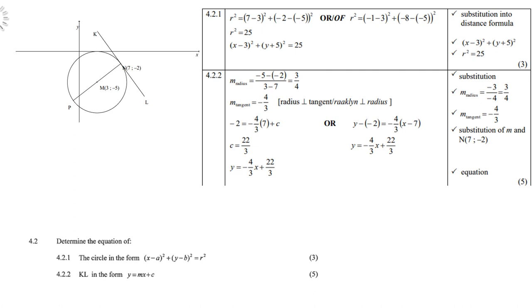Then KL in the form Y equals MX plus C. So we must first find the gradient of M using the gradient formula: minus 5 minus negative 2 over 3 minus 7, which gives you 3 quarters. Now remember, a tangent and the radius is perpendicular. So the product must give you negative 1. Therefore, the tangent gradient will be negative 4 thirds, the opposite of 3 quarters. Then substitute that into the equation, either Y equals MX plus C or the other formula Y minus Y1 equals M times X minus X1. Choose any of the two formulas. Do your substitution. And your answer is Y equals negative 4 thirds X plus 22 over 3.